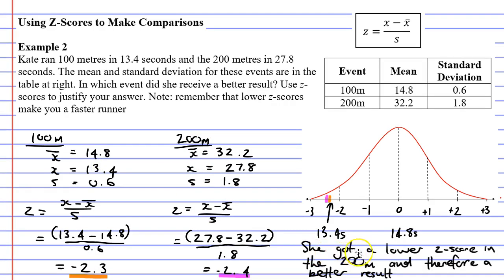So she got a better result in the 200 meters. So we will say that she got a lower z-score in the 200 meters, and therefore a better result. Anyway, that concludes example two. Remember to read the description below for links to workbooks that relate to this video.